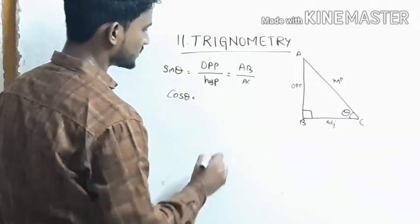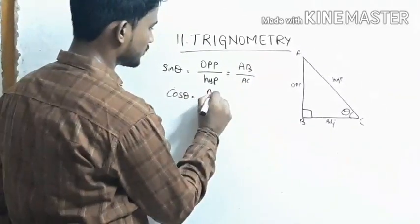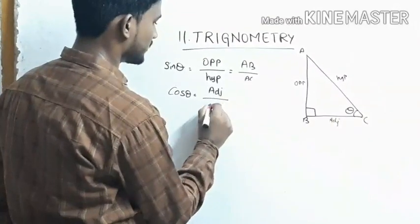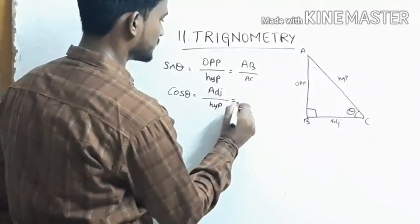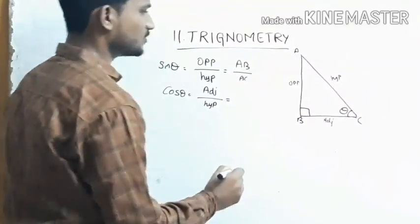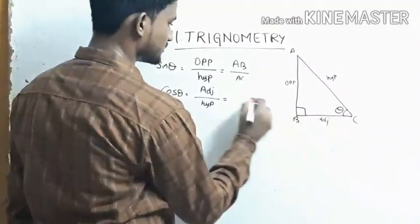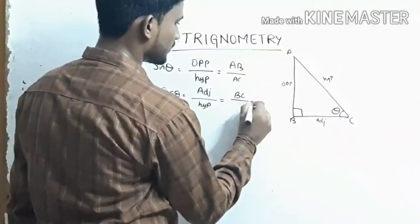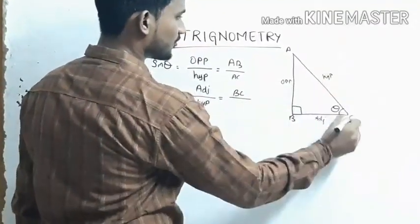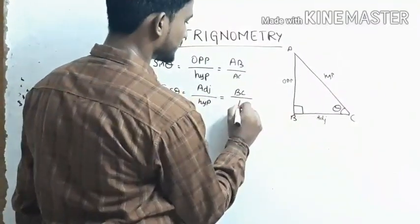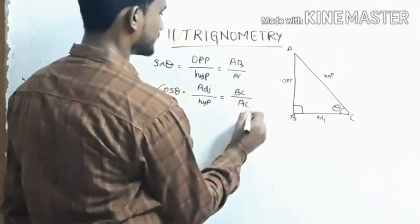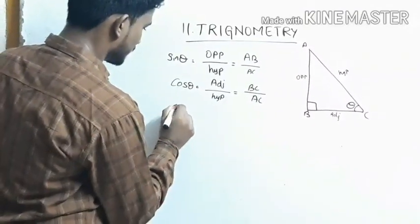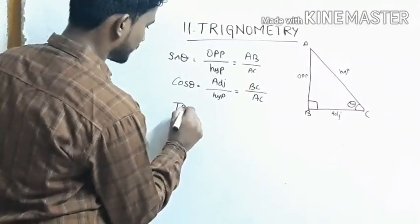Next, cos theta. Cos theta equals to adjacent by hypotenuse. This equals to adjacent BC by hypotenuse AC. Next we want to find tan theta.